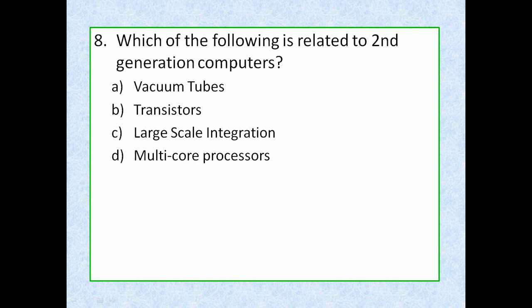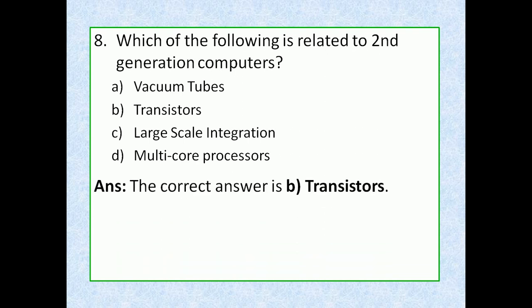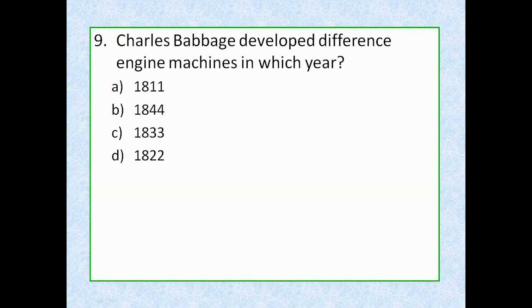Question 8: Which of the following is related to second generation computers? Option A: vacuum tubes, option B: transistors, option C: large scale integration, option D: multi-core processors. The correct answer is option B, transistors. Second generation computers were characterized by their use of transistors, which replaced vacuum tubes. Transistors were smaller, faster, more reliable, and more energy efficient, allowing for more powerful and compact computers.